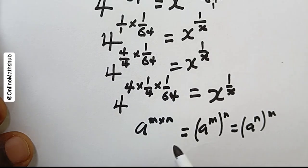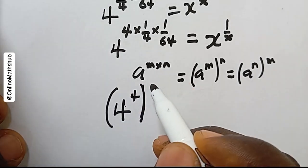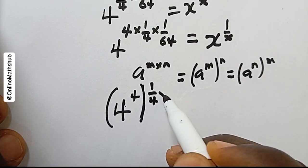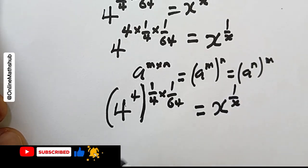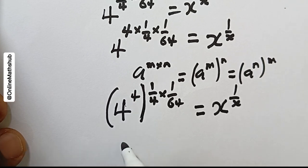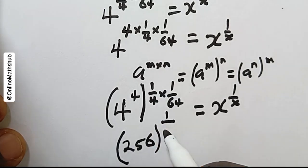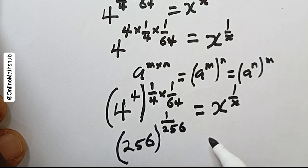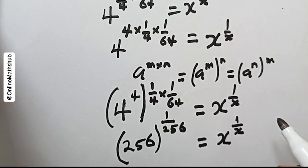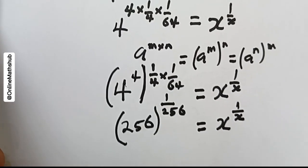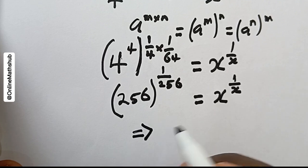Using this index rule to simplify, I'm going to have 4 to the power 4, with the quantity one over 4 multiplied by one over 64 taken outside the parenthesis. This is still equal to x to the power one over x. Evaluating, 4 to the power 4 gives us 256, raised to the power one over 256, and this equals x to the power one over x.